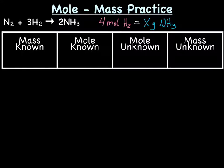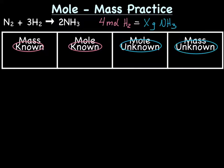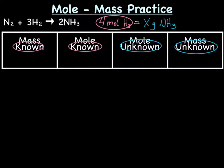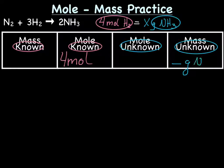The next step is to fill out our map—this is really the only part of the problem where you need to think. Our known is 4 moles H2, which goes in the mole known area. Our unknown is blank grams NH3, which goes in the mass unknown area.